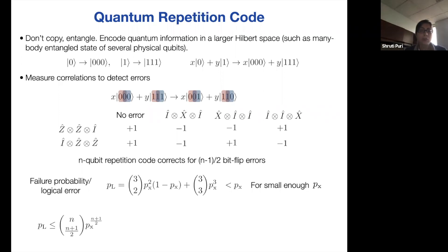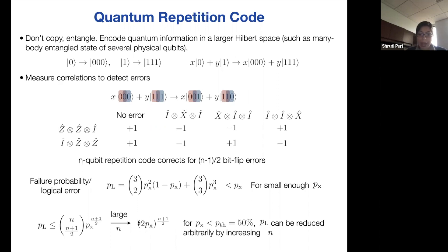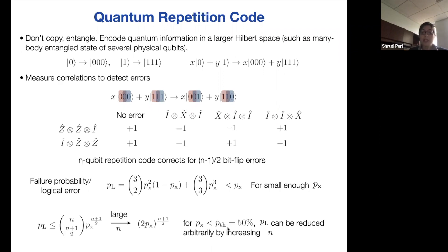This is a three-qubit repetition code that corrects for one bit flip error. If two bit flip errors occurred, we would not be able to do this trick. In general, an n-qubit repetition code can correct for (n−1)/2 bit flip errors. For a three-qubit bit flip code, the probability of failure is the probability that two or three errors happen, and this is smaller than p_x — the probability of a single bit flip. So the logical error rate is smaller than just the physical failure rate p_x. For large n, as long as p_x is smaller than 1/2, increasing the code size decreases the logical error rate. This value of p_x = 1/2 — or 50% — is called the threshold. Below threshold, error correction succeeds; above it, errors get worse. The quantities we measure to detect errors are called stabilizers.